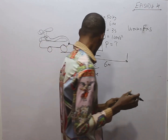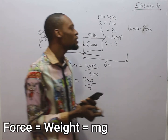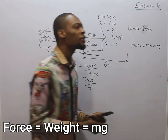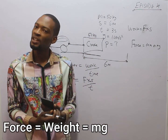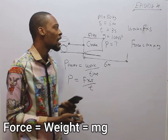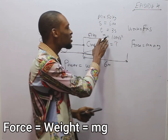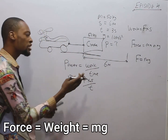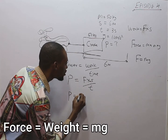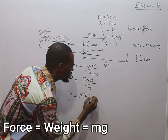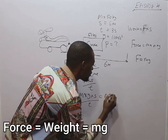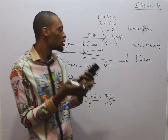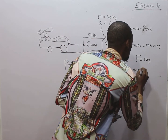Now, what is force? Force is simply ma or mg — the product of a body's mass and acceleration. The unit of force is newtons. Since we are given gravity, we take force to equal mg. Therefore, instead of force, we put mg. So power equals mg times s over t, which gives us: P = mgs/t.